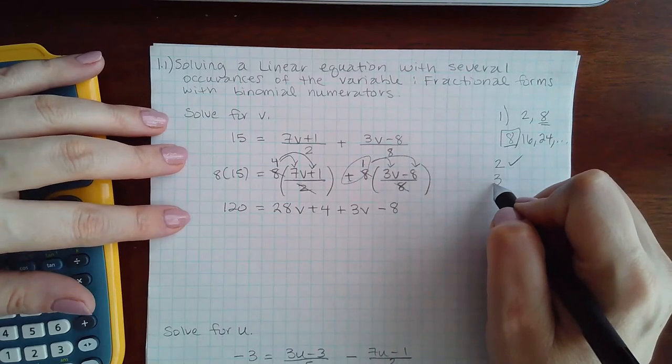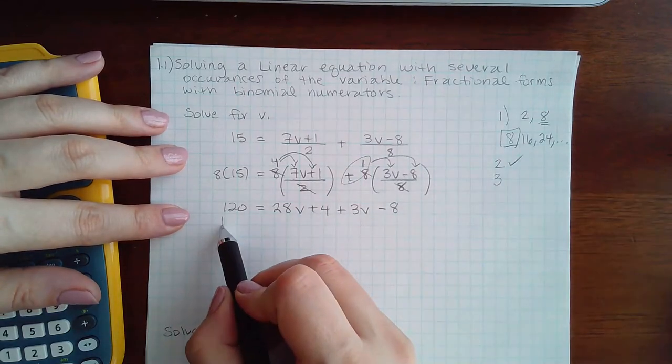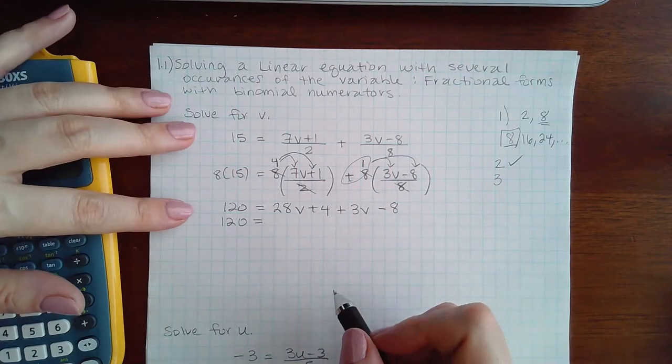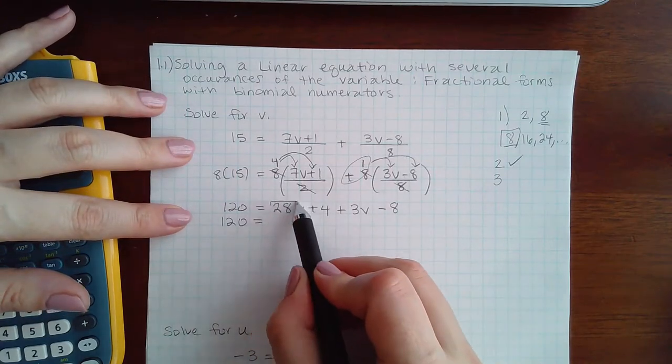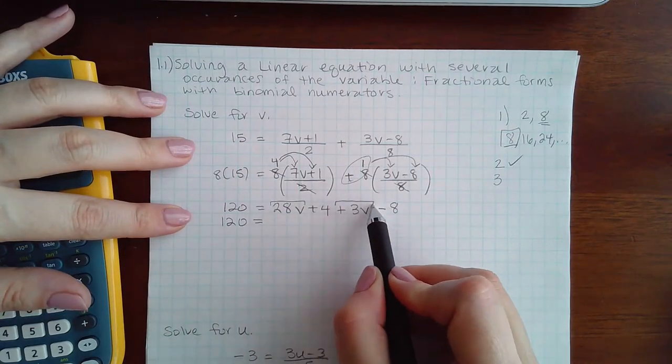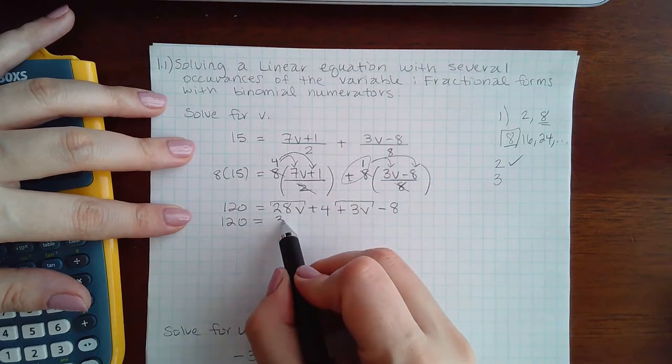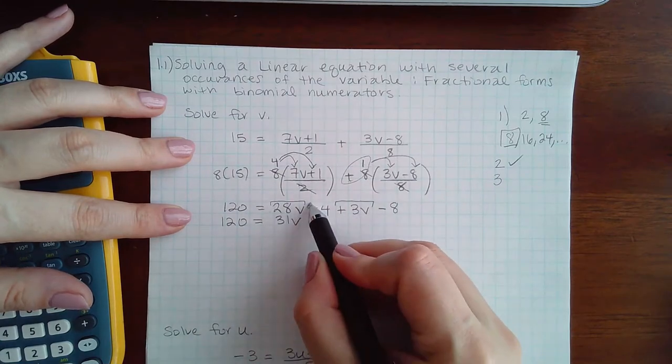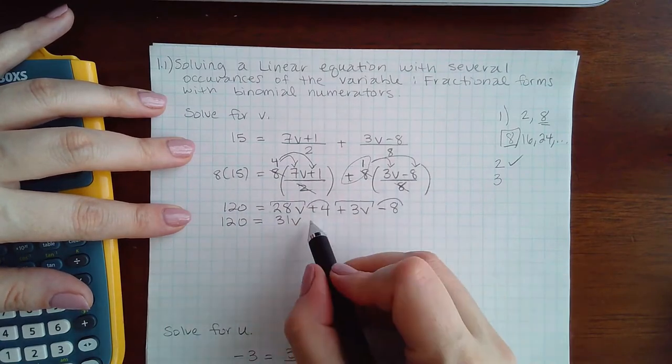Step 3 is to combine like terms on each side. So 120, there's only one term, nothing to combine. Here I can combine 28V plus 3V, which is 31V. And I can also combine the constants and get negative 4.